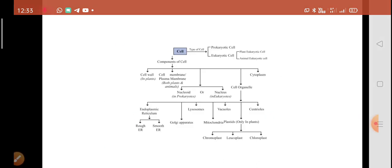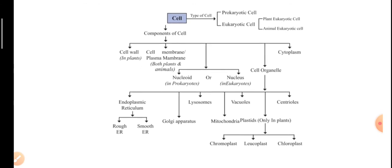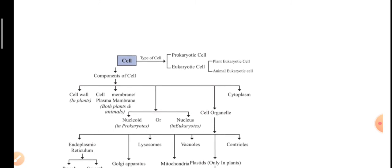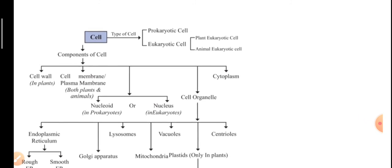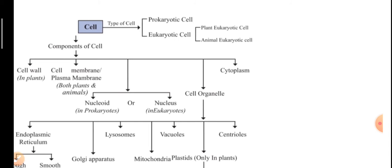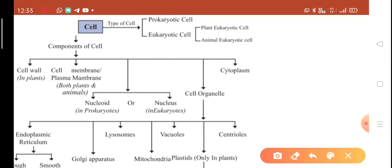Now we can go ahead to the flow chart of cells. Organisms are divided into single cell and multicellular. The types of cells are two: prokaryotic cell and eukaryotic cell. Eukaryotic cells are divided into two parts, found in plants and animals. So eukaryotic cells are found in both plants and animals.